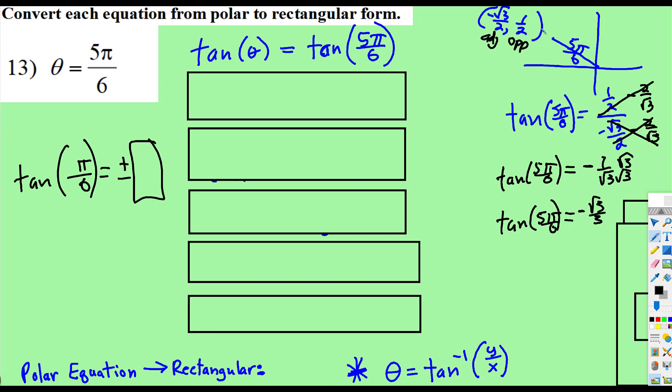Remember, cosine is negative in the second quadrant, and so is tangent. Sine and cosecant are the only ones positive. I'm going to go ahead, if you need to write this down, pause the video, because I'm going to erase it right now,